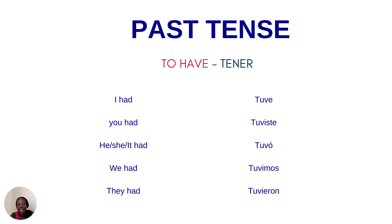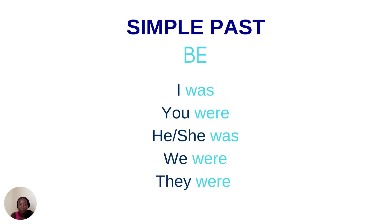Let's have a look at the verb 'to be'. I was, you were, he/she was, we were, and they were.